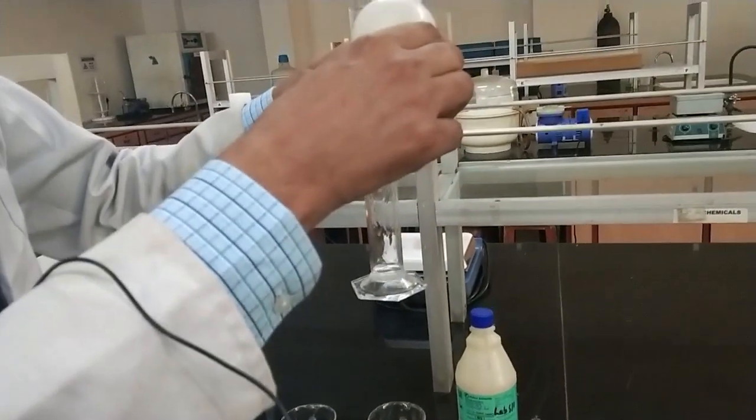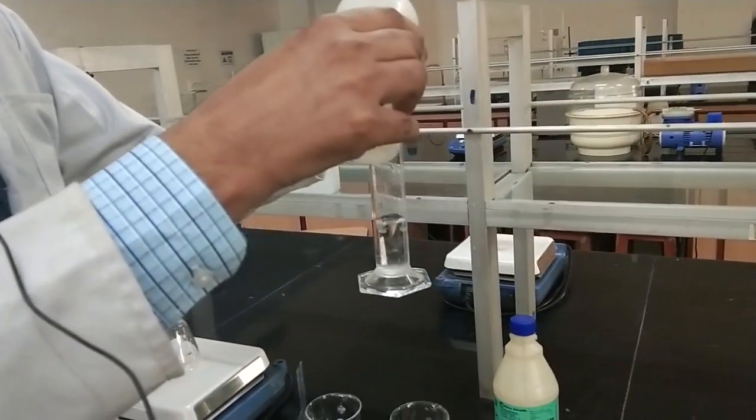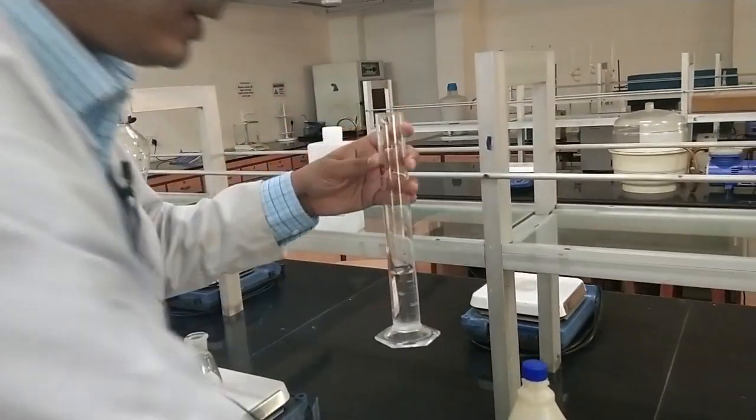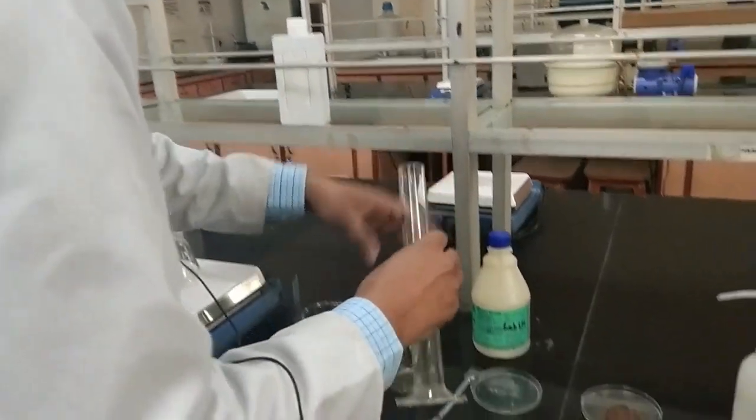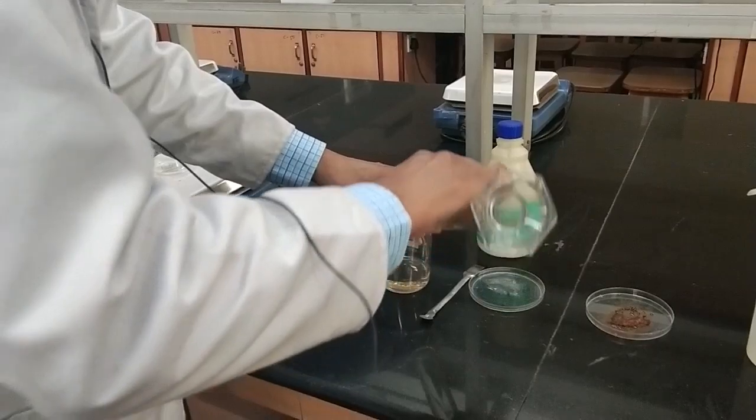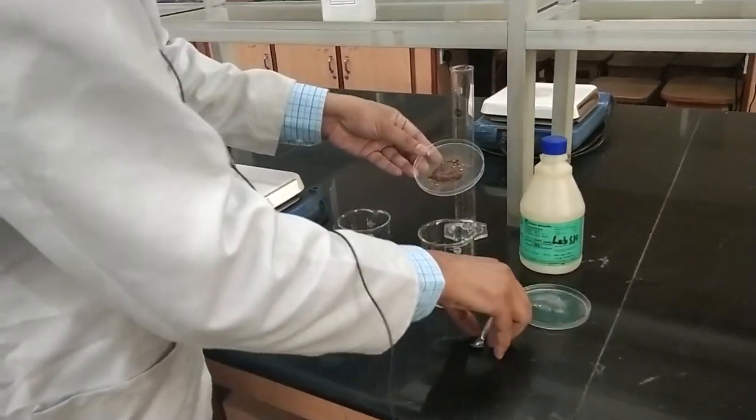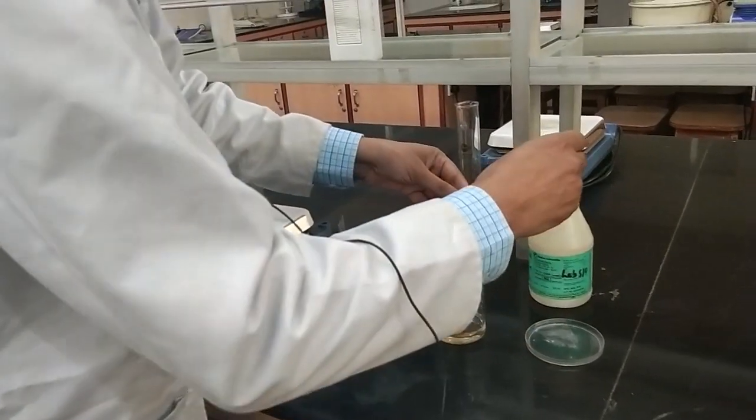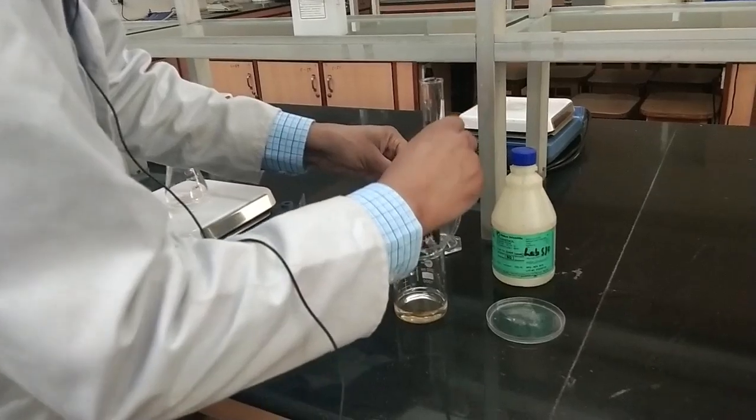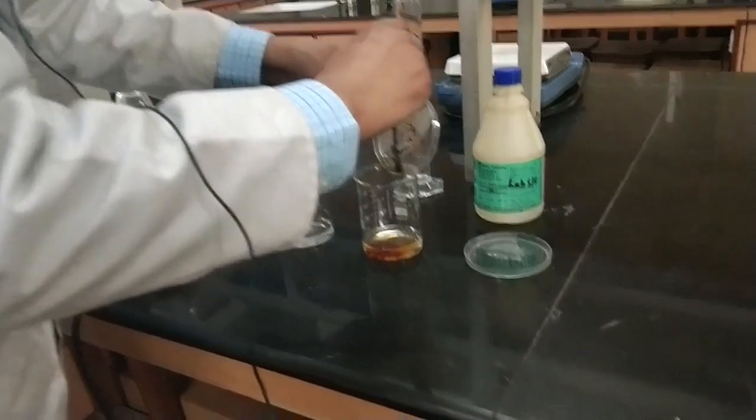While it is going to get solubilized, we will make iron chloride solution. We are measuring 40 milliliter of distilled water and we are going to add already measured iron chloride. This will make 0.01 molar solution of iron 3 chloride.